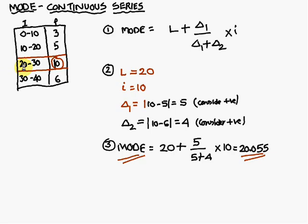The lower interval for this row is 20, so L = 20. The interval difference, I, is 10.